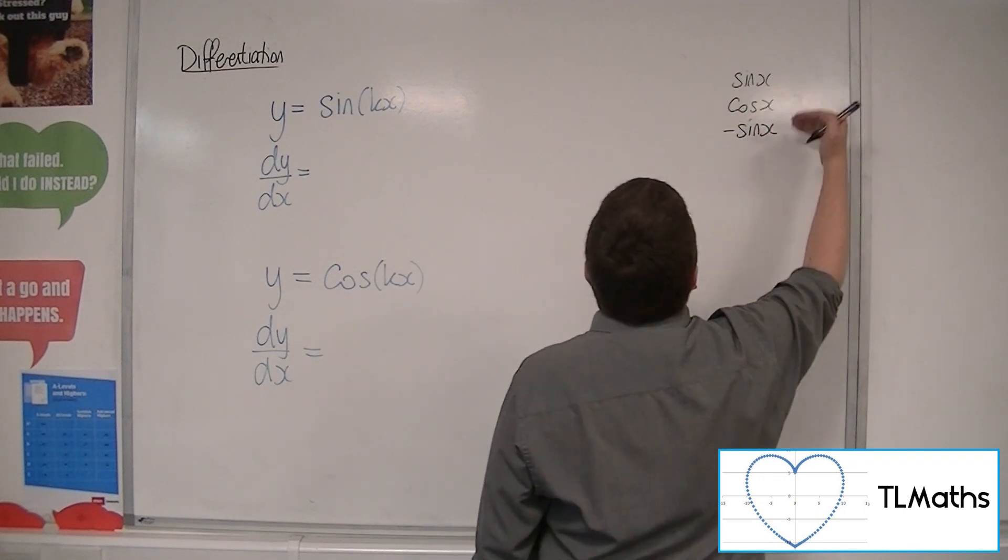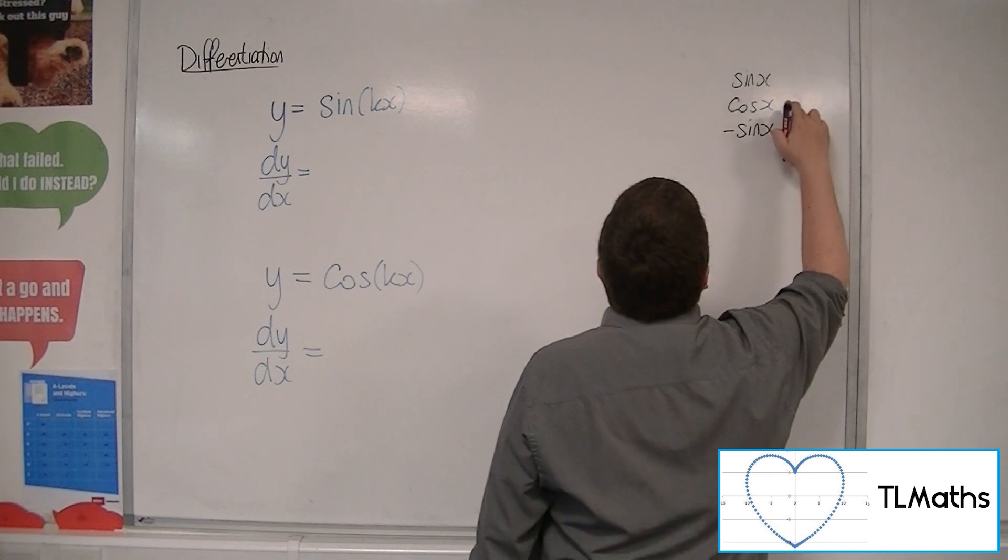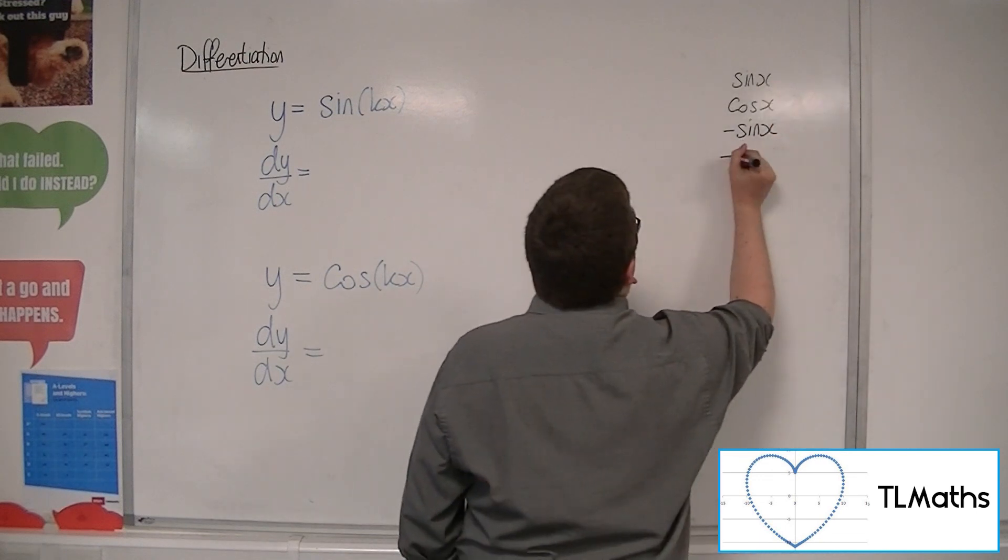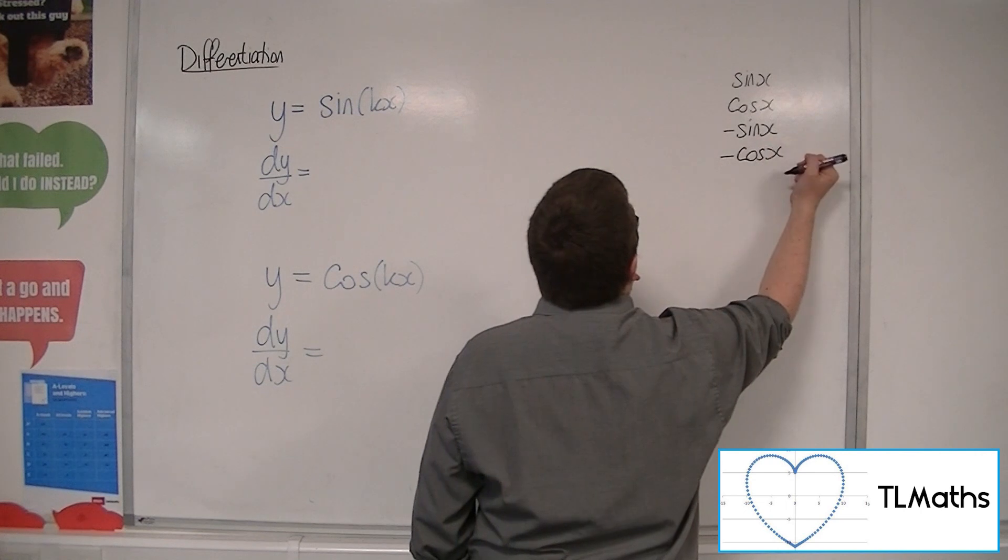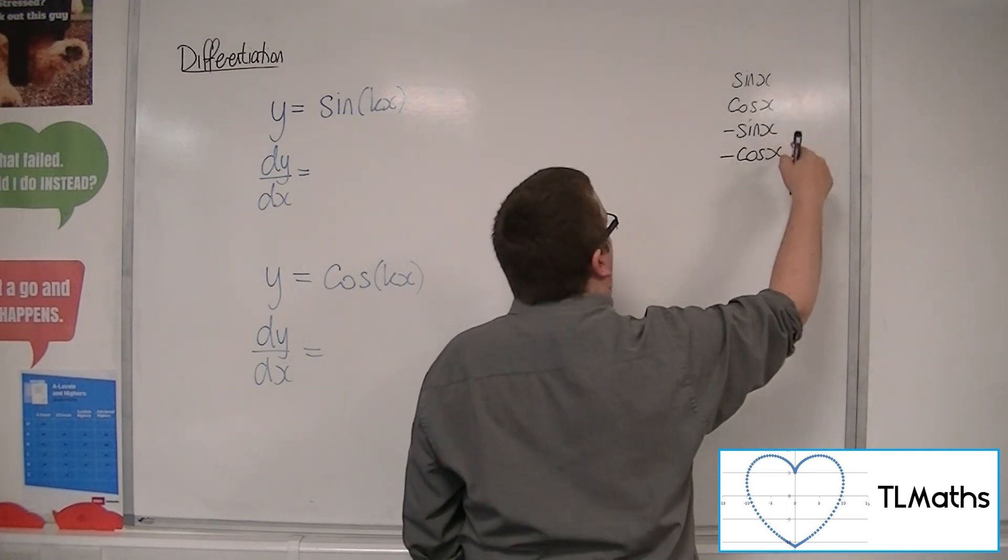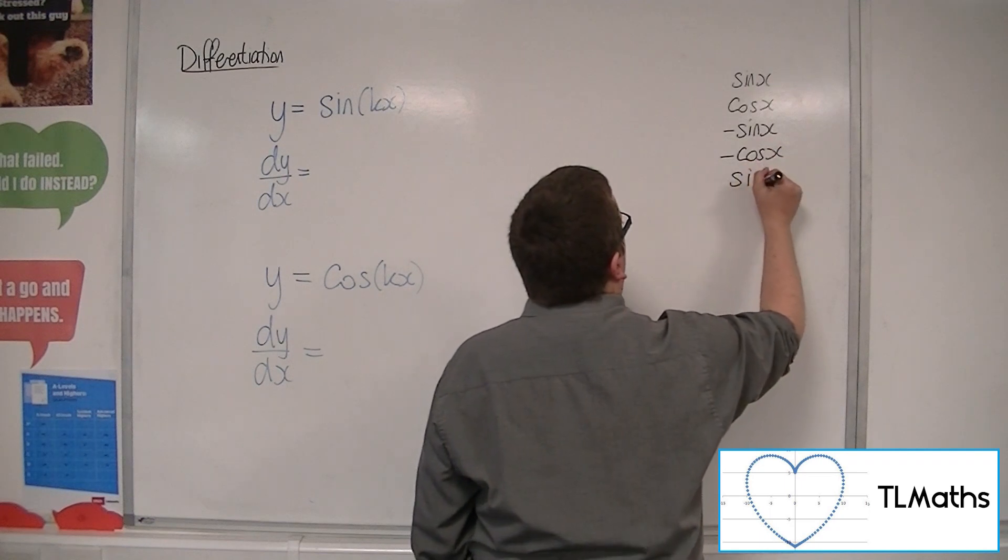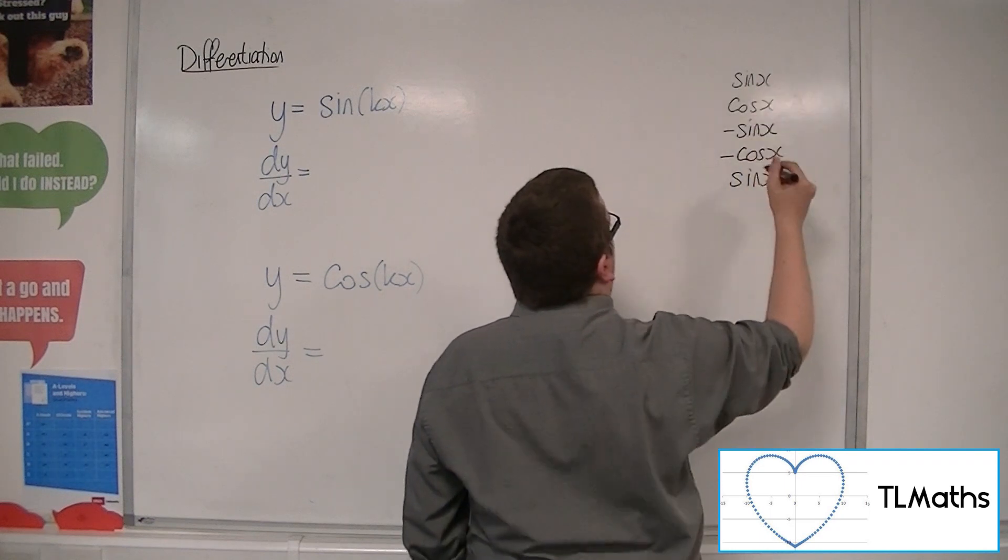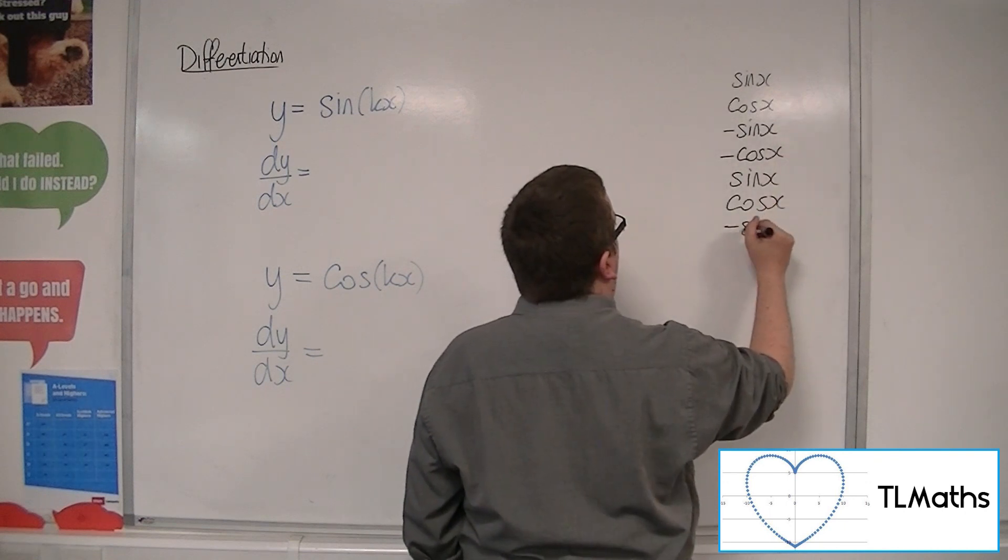So if that's the case, if sine x goes to cosine of x, then minus sine of x must go to minus cosine of x. And if cosine goes to minus sine, then minus cosine must go back to sine. And so this reverse keeps the process going.